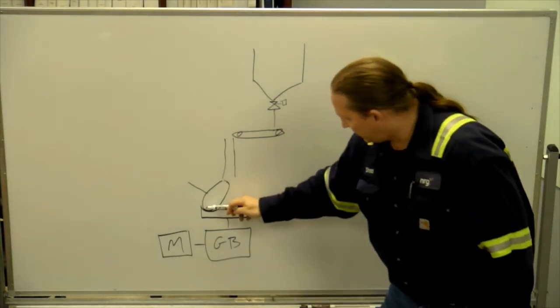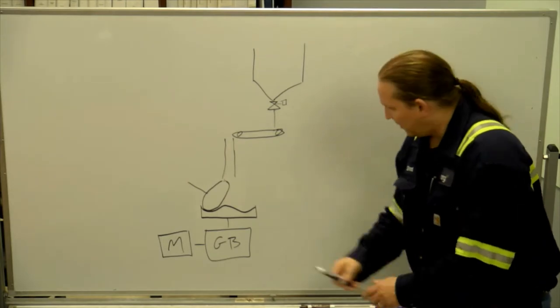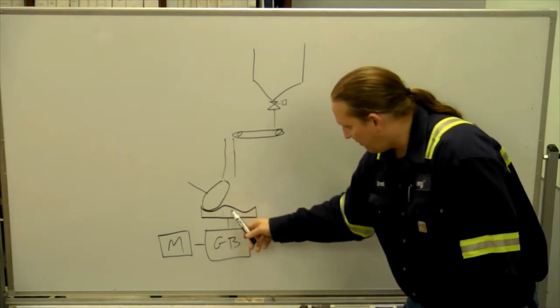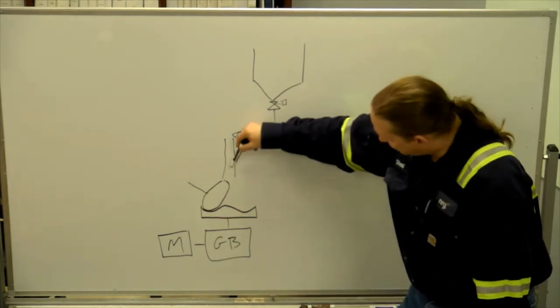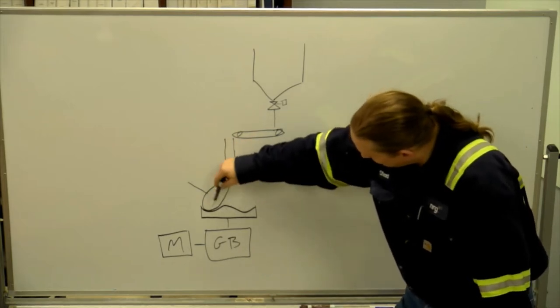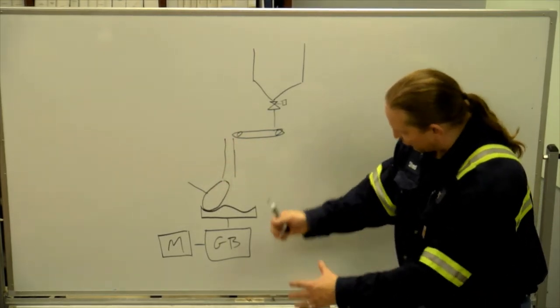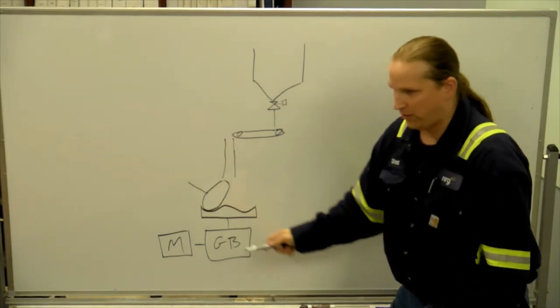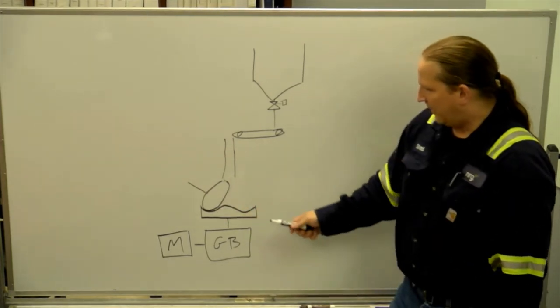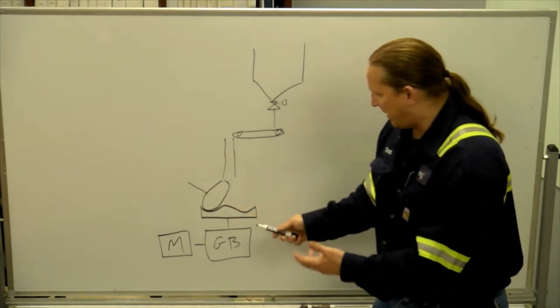So we've got a wheel—there's three of them—and they sit in the groove of that table. So the coal comes down and the table turns. Because of the shape of the table, there's a centrifugal force. It gets slung out under the wheel and the wheel grinds it up into a powder.